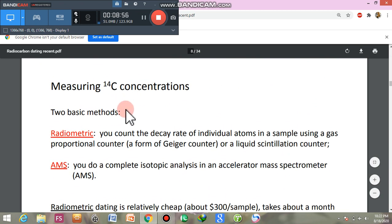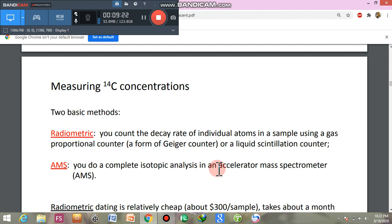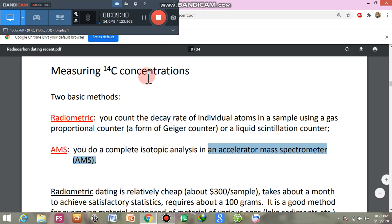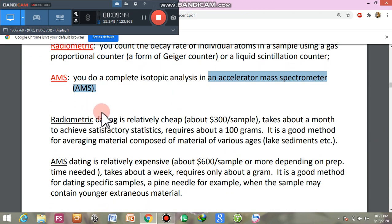Measuring carbon-14 concentrations, you have two methods. Radiometric method: you count the decay rate of individual atoms in a sample using a gas proportional counter, a form of Geiger counter, or a liquid scintillation counter. AMS: you do a complete isotope analysis in an accelerator mass spectrometer. You have to go to higher classes for mass spectrometer techniques. We can detect carbon-14's concentration. Radiometric dating is relatively cheap, about $300 per sample.